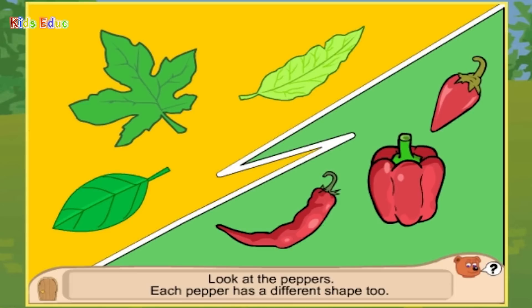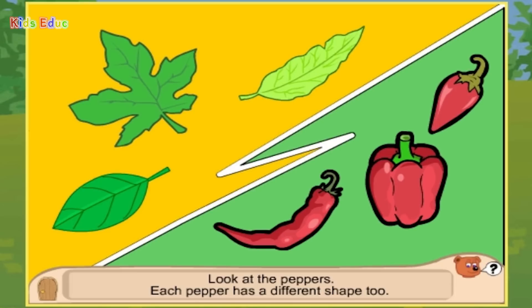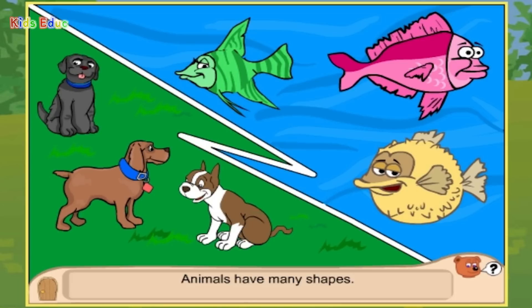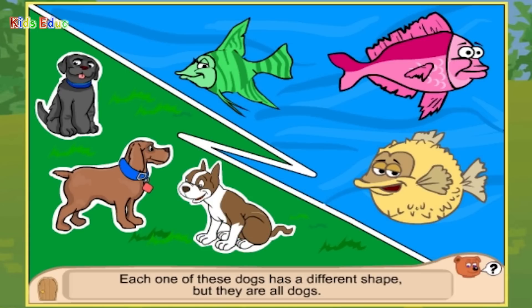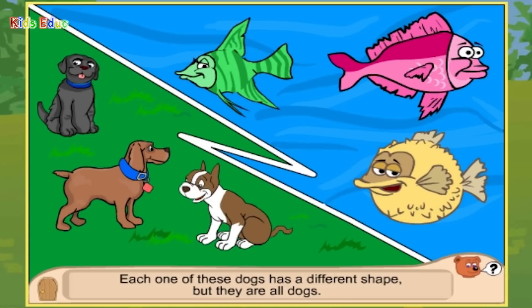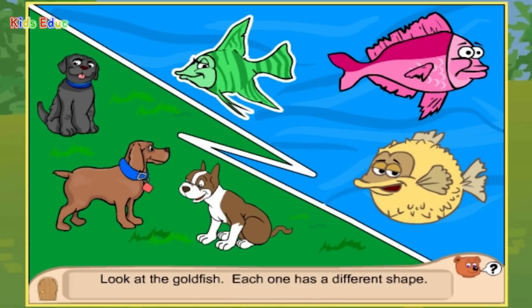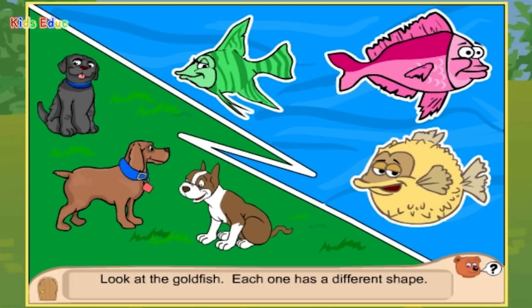Look at the peppers. Each pepper has a different shape too. Animals have many shapes. Each one of these dogs has a different shape, but they are all dogs. Look at the goldfish. Each one has a different shape.